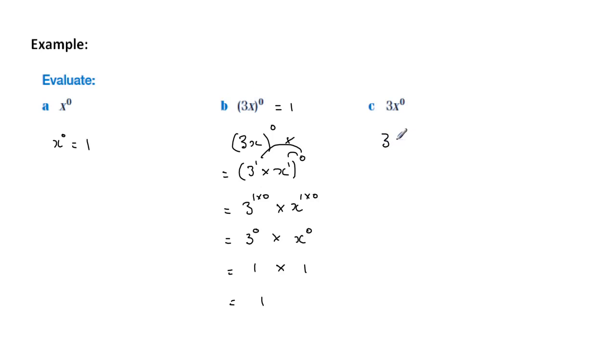First of all in expanded form this becomes three times x to the zero. So as you can see only the x is to the power of zero, so that would be three times one which equals three.